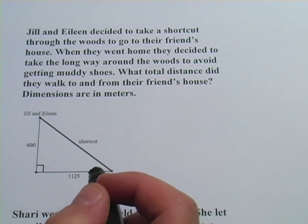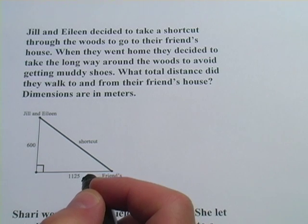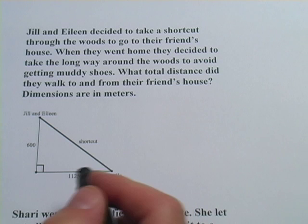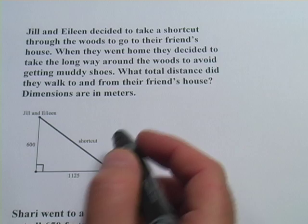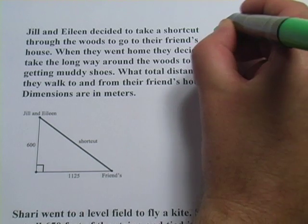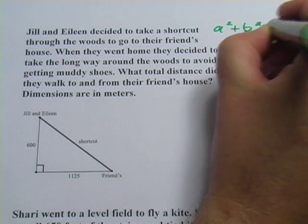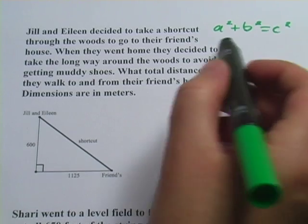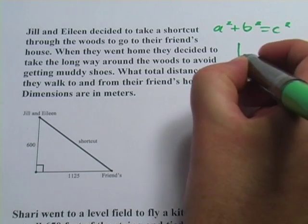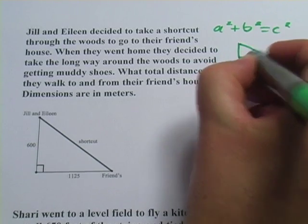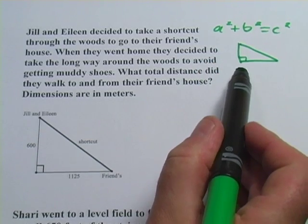In these problems we're looking at ways that you can use the Pythagorean theorem to solve real world problems. And remember, the Pythagorean theorem is a squared plus b squared equals c squared. And those a and b and c, those are the sides of a right triangle. So you've got to have a triangle and one of those angles has to be a right angle, a 90 degree angle.